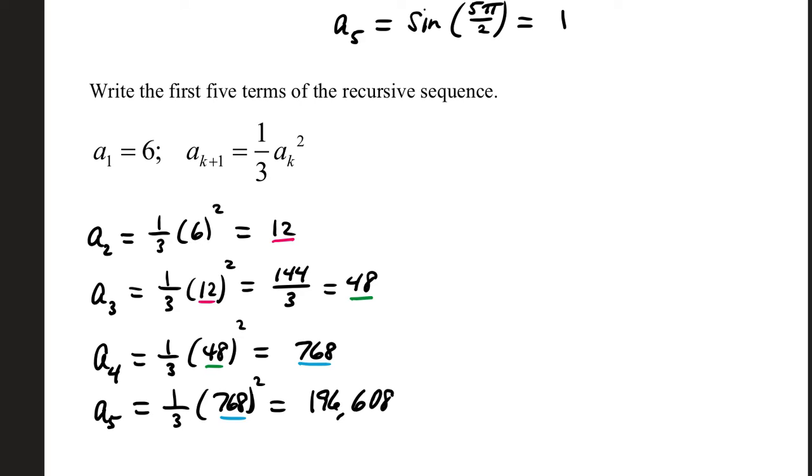And then finally, a sub 5, the fifth term of the sequence, is 1 third times the fourth value, squared. And that was really large.